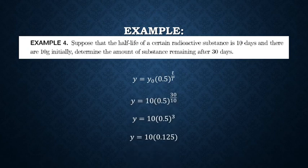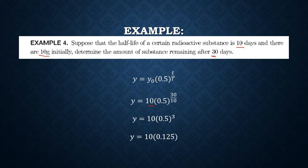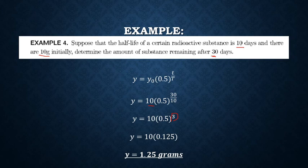For example, 10 grams of radioactive material halves every 10 days. After 30 days, it has halved 3 times — that is, raised to 3 — and in the end our mass is now 1.25 grams.